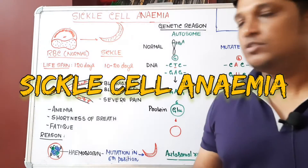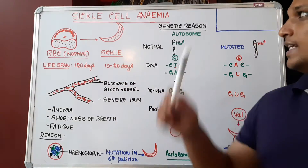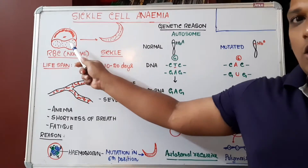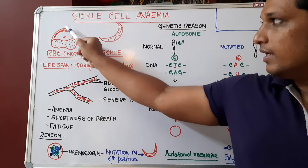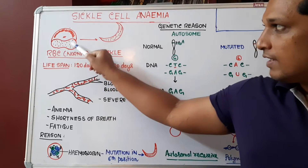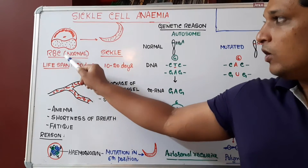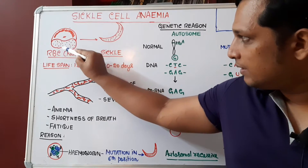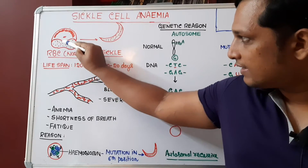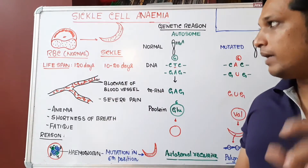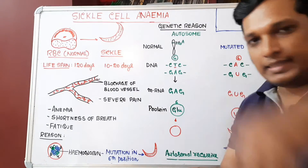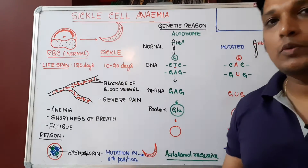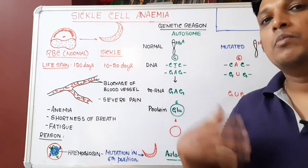Hello, good morning everyone. Today's topic is sickle cell anemia, one of the genetic disorders. A normal RBC looks like a biconcave disc-shaped structure. In cross-section you can see depressions at the center, which indicates biconcave. It is a disc-shaped RBC whose lifespan is 120 days.